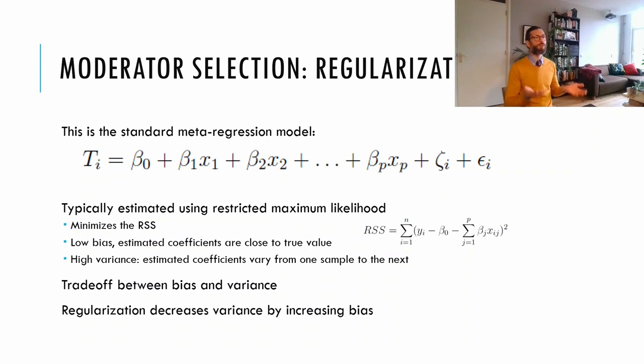And in general, there's always a trade-off between those two quantities. A method with low bias will have higher variance, and vice versa. The trick in machine learning is to find the optimal balance between bias and variance, to find a model that is not overfitted and that generalizes well. And regularization performs this trade-off, increasing bias in order to decrease variance.